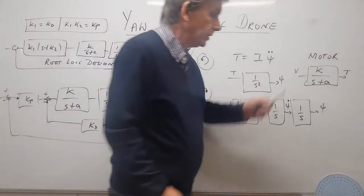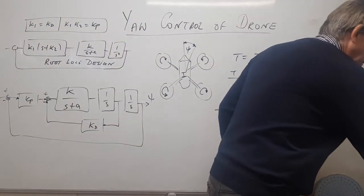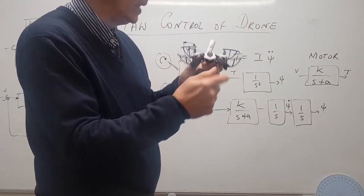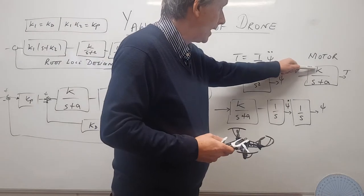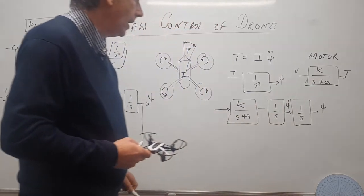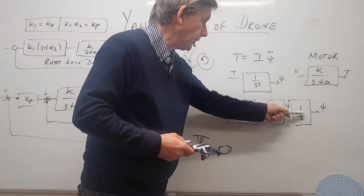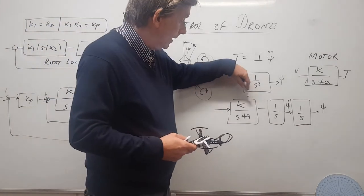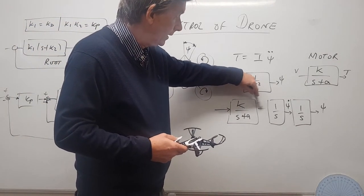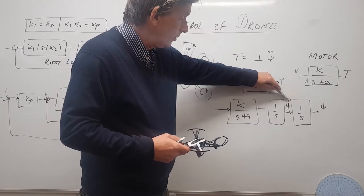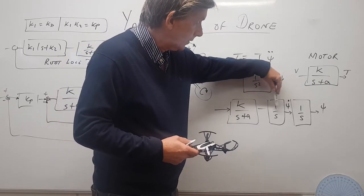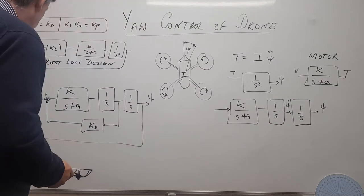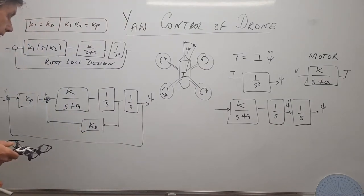The motors themselves can be modelled as k/(s+a). So the overall transfer function has voltage applied to the motor, the motor produces torque, that torque gives a yaw rate, and integrating yaw rate gives the yaw angle.